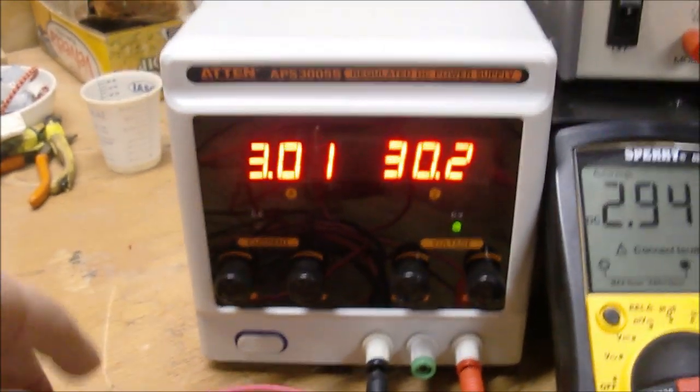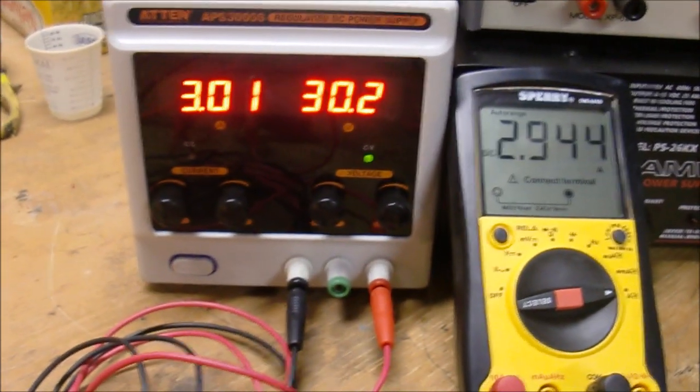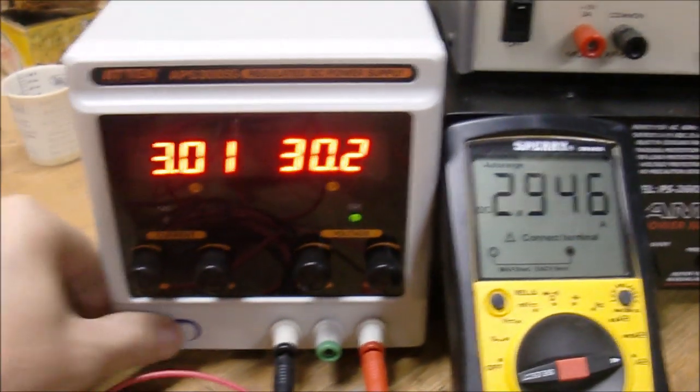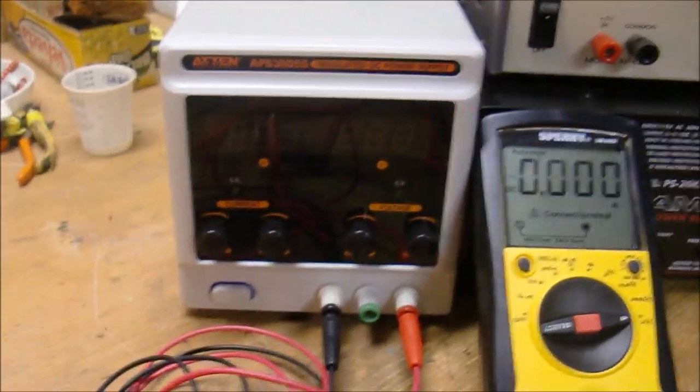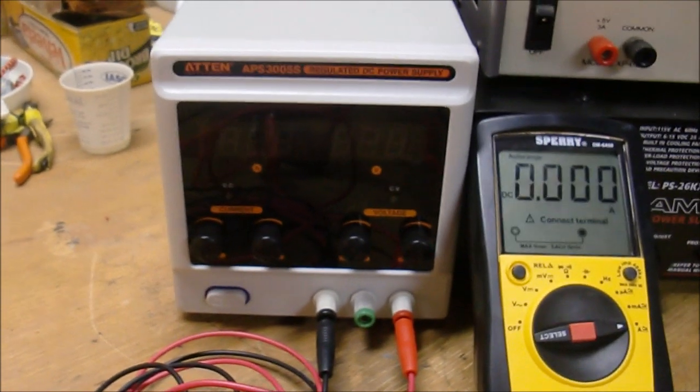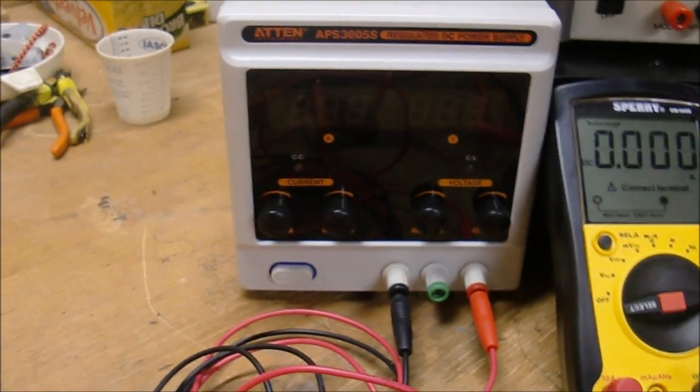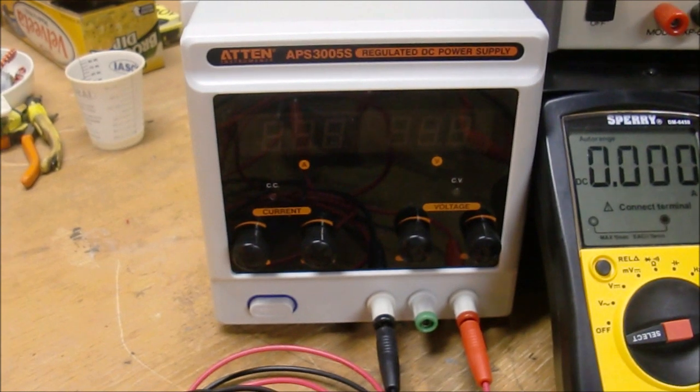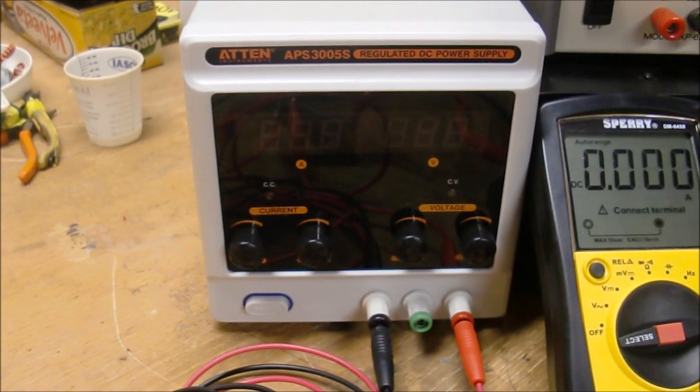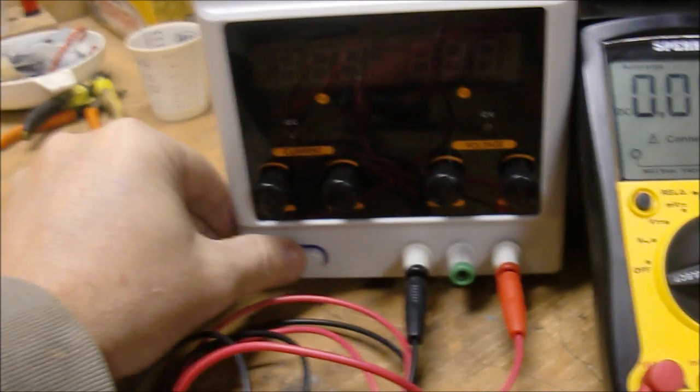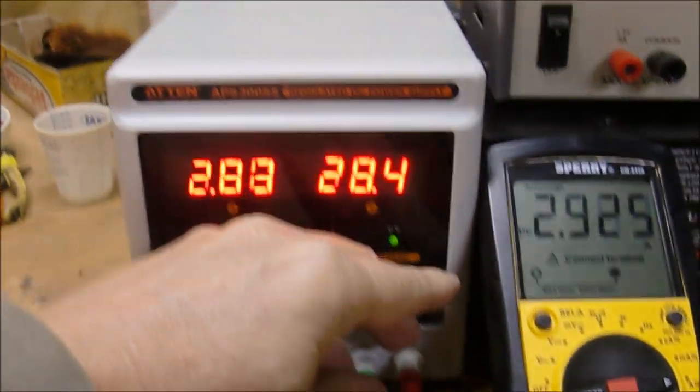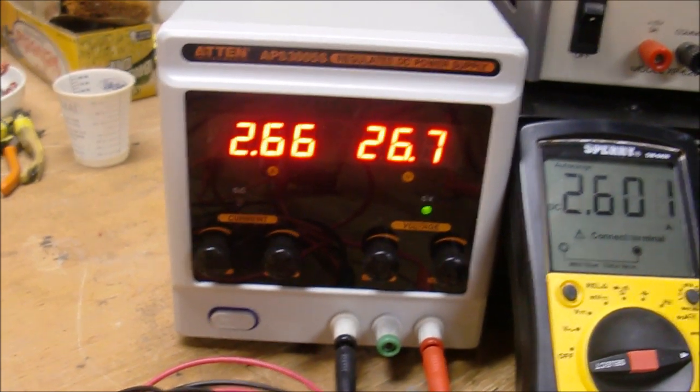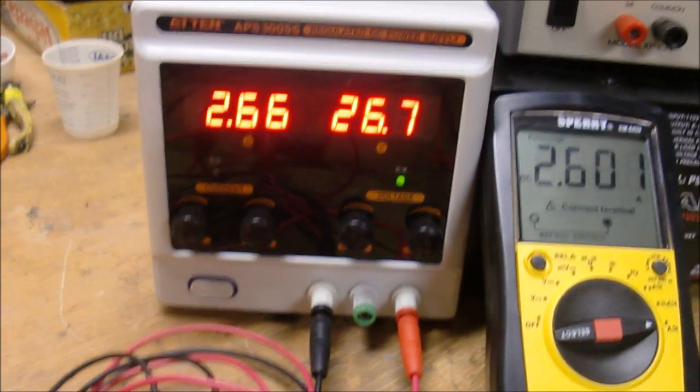So I'll give a thumbs up to the Aiton APS 3005. I got it on eBay for $72, it's normally $79. This is really a bargain. It's not a very high quality unit, but I don't use it often enough to really justify spending $300. Take a look at the Aiton APS 3005. I'll leave a link in the description. Talk to you later.